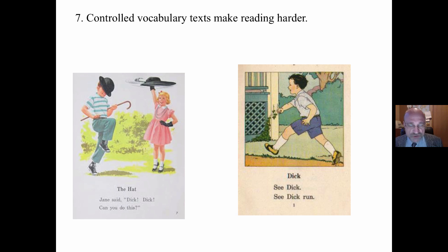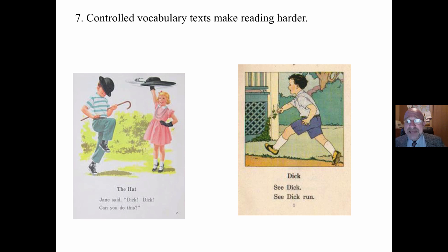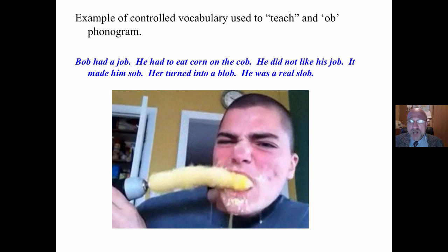A controlled vocabulary makes reading harder because the sound of the language is not like what students encounter naturally. For example: "Jane said, 'Dick, Dick, can you see this? Dick, see Dick, see Dick run.'" That is not like the language we encounter, and it makes learning to read harder.